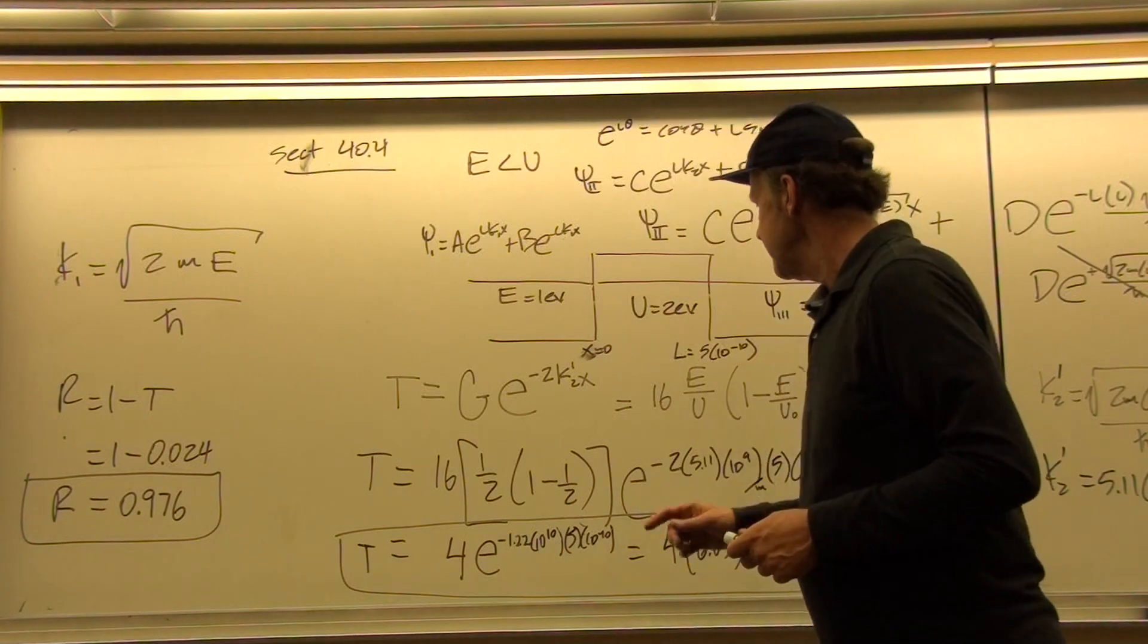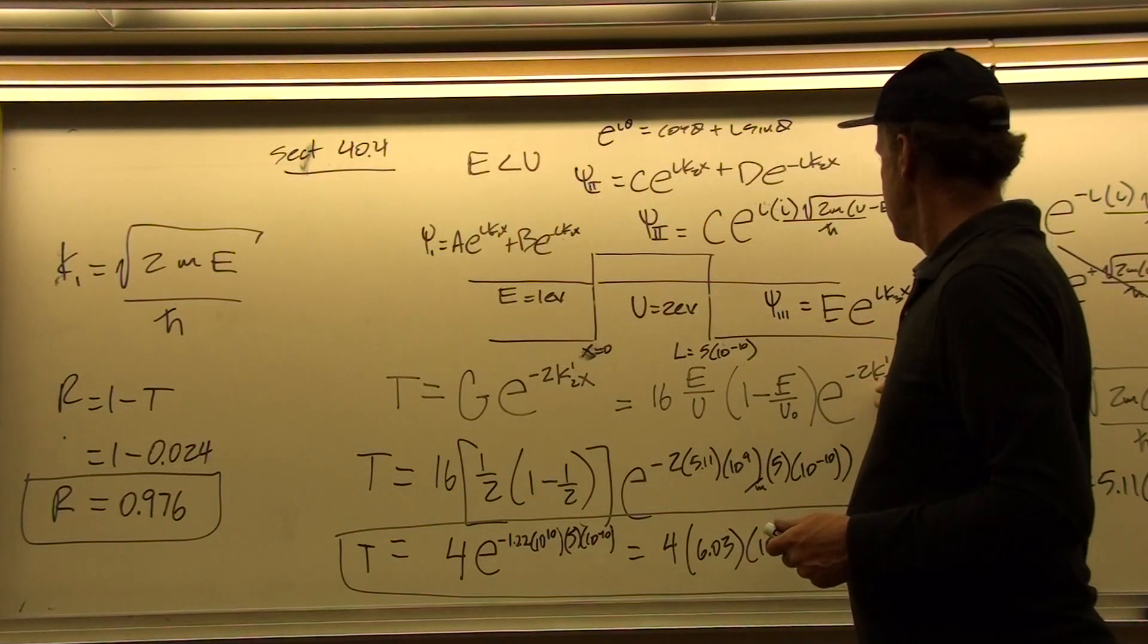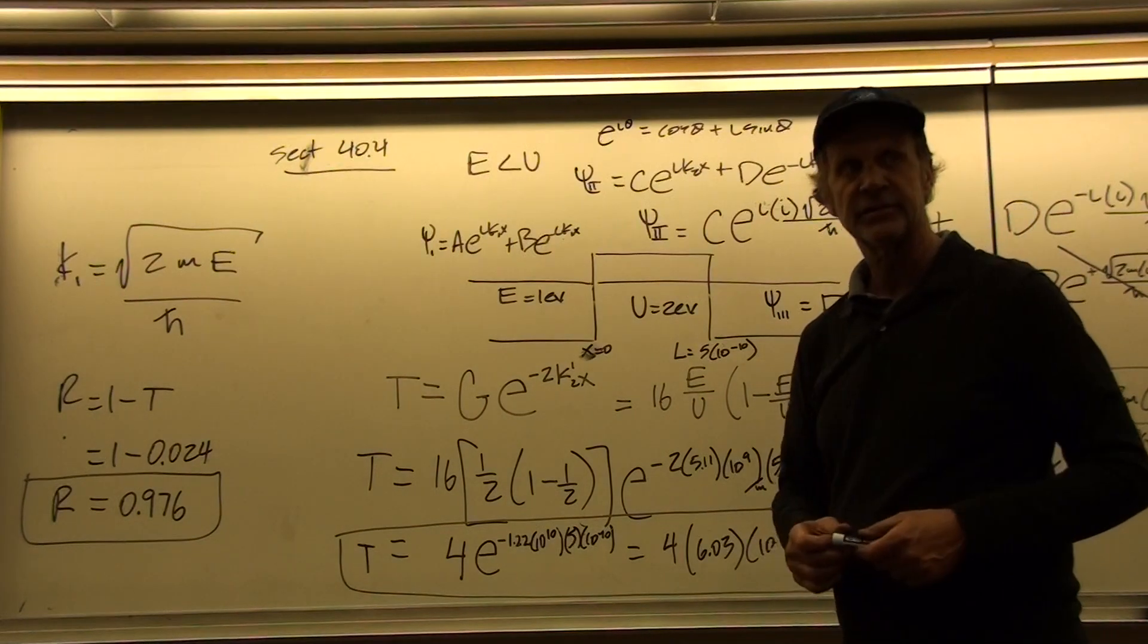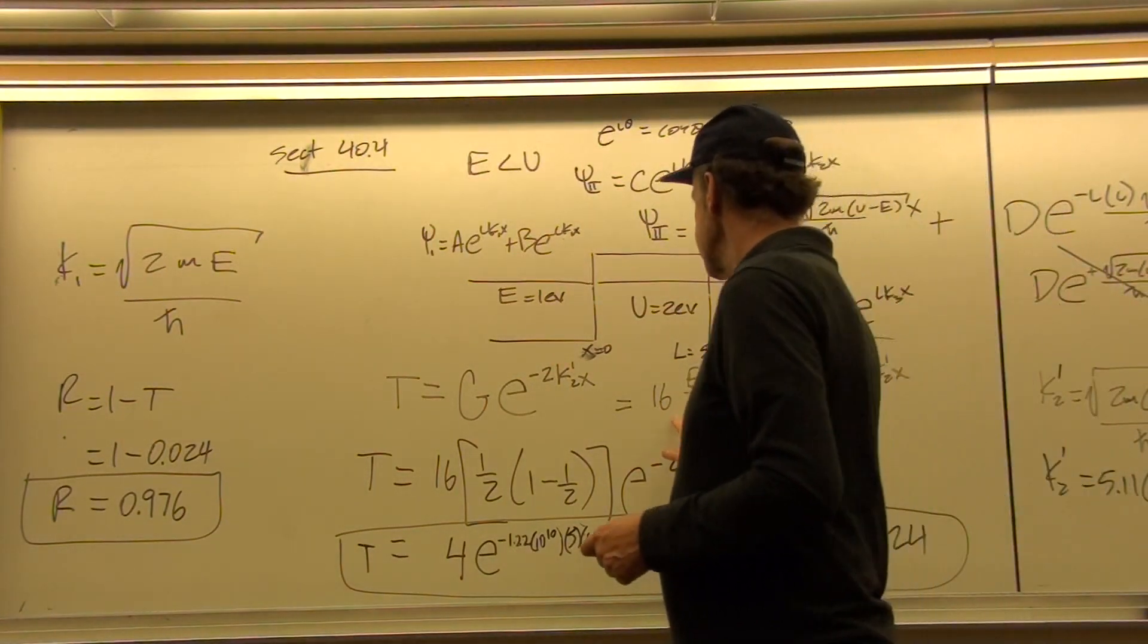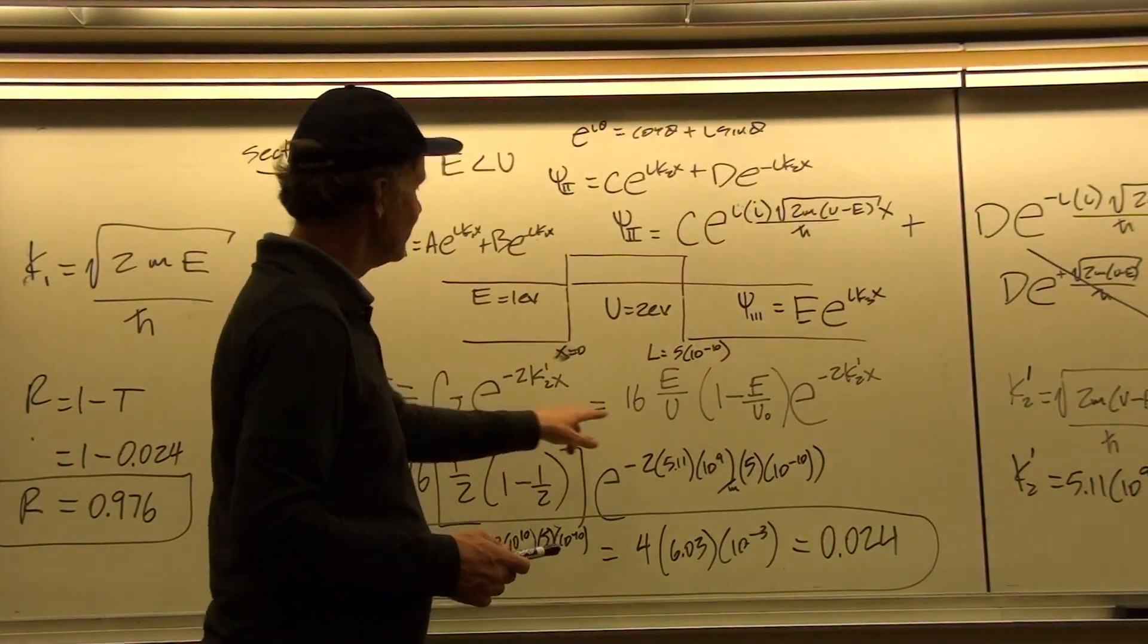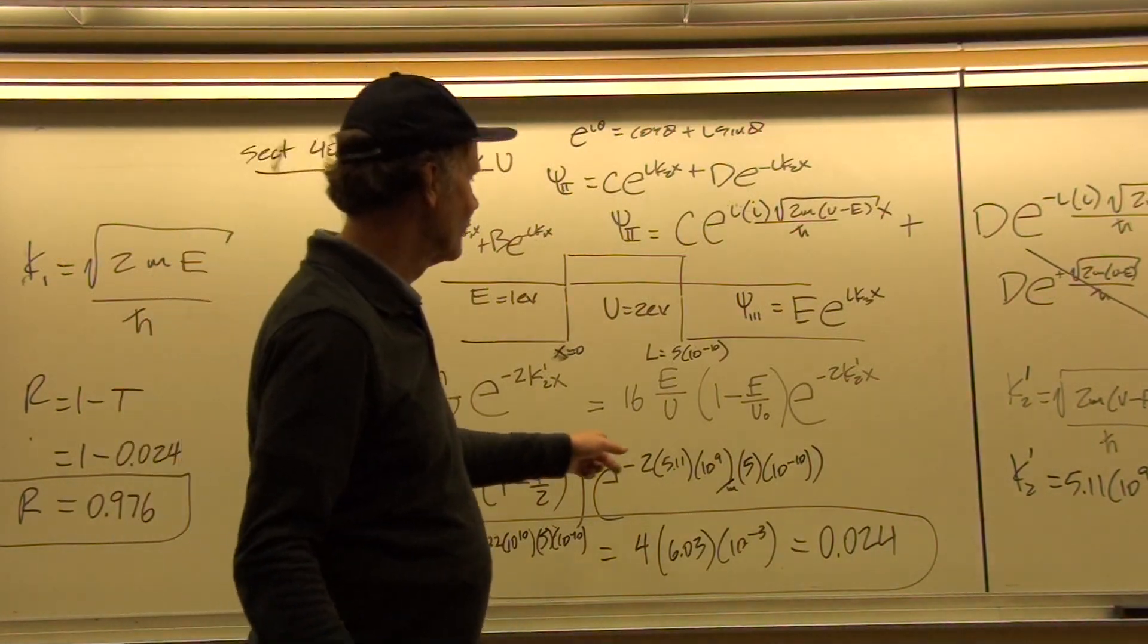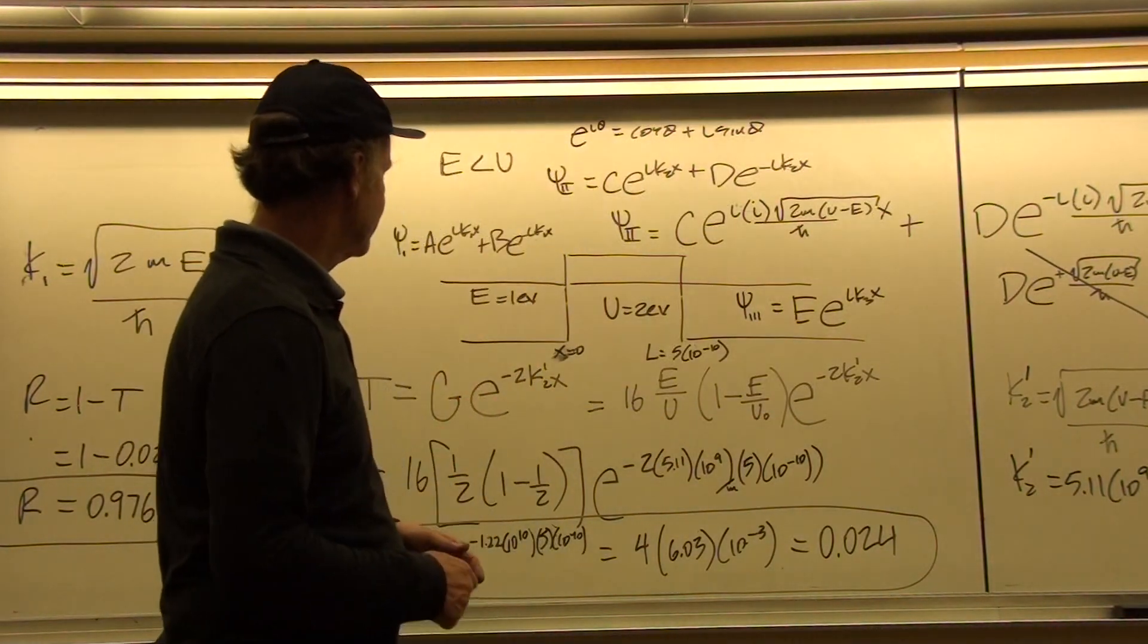But in the limit where the exponential argument here is a relatively small number, this is approximately true. And so we have to be careful that we don't get a transmission probability that's greater than 1 because that means we're outside the range where this equation is valid.